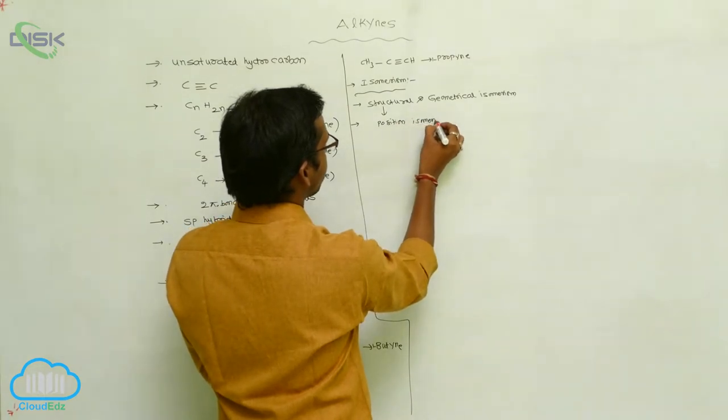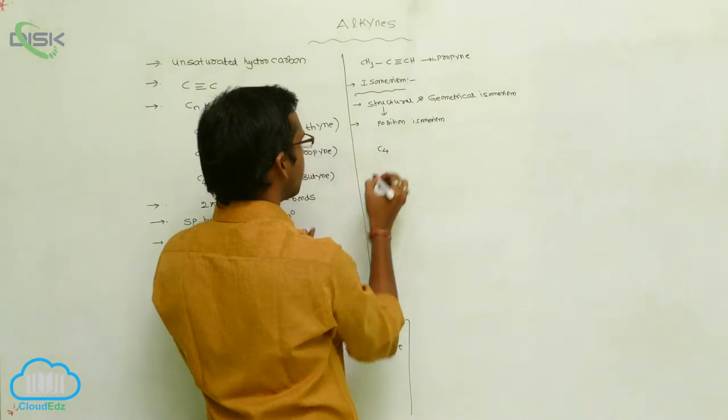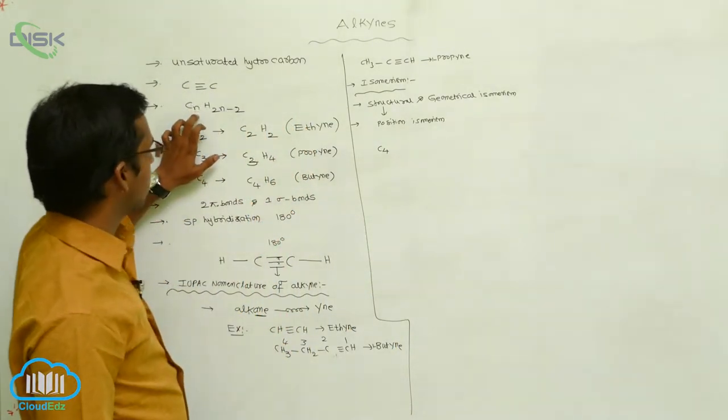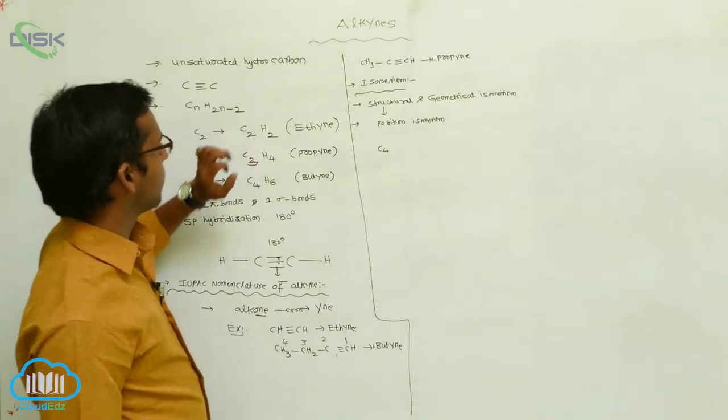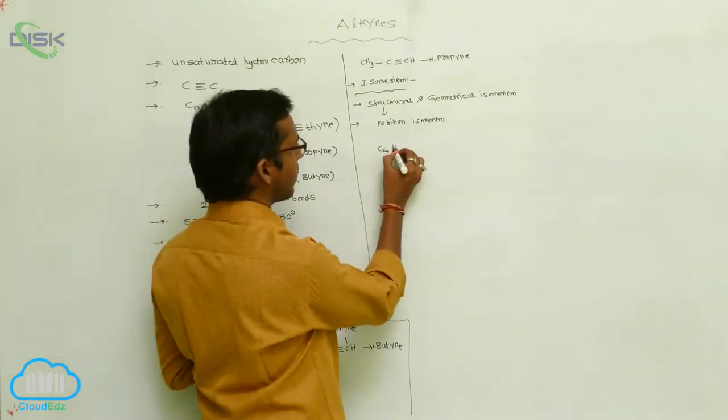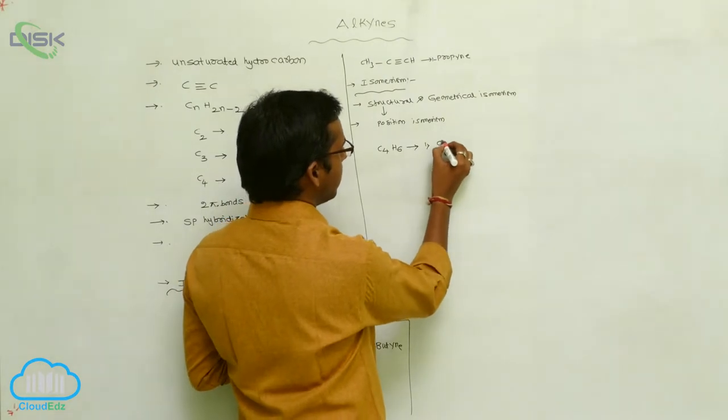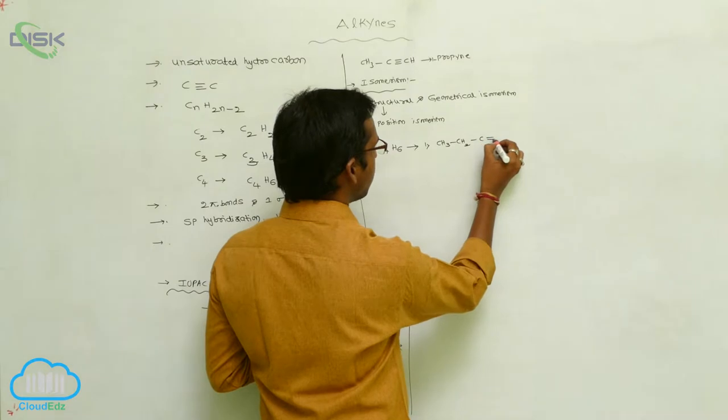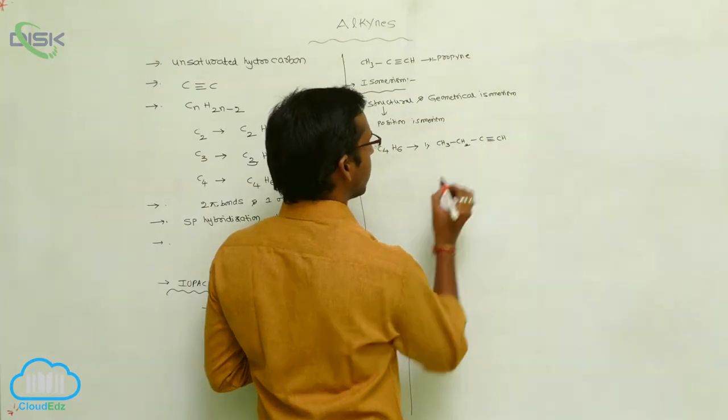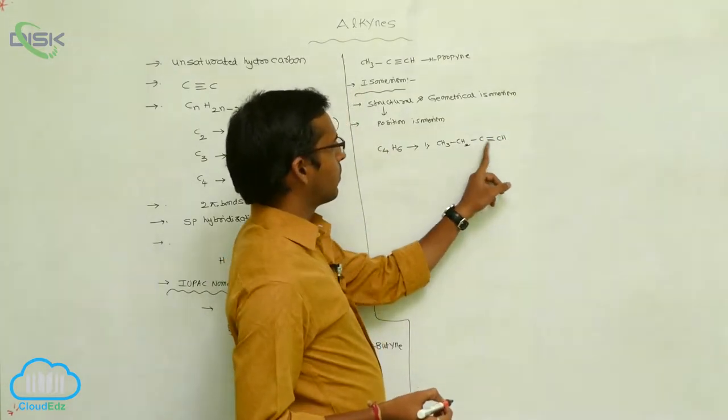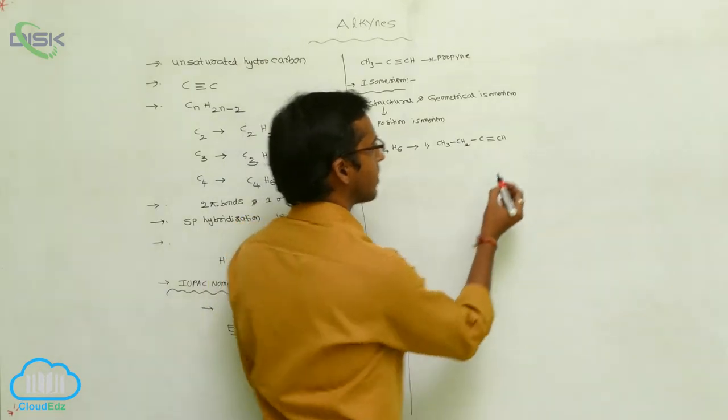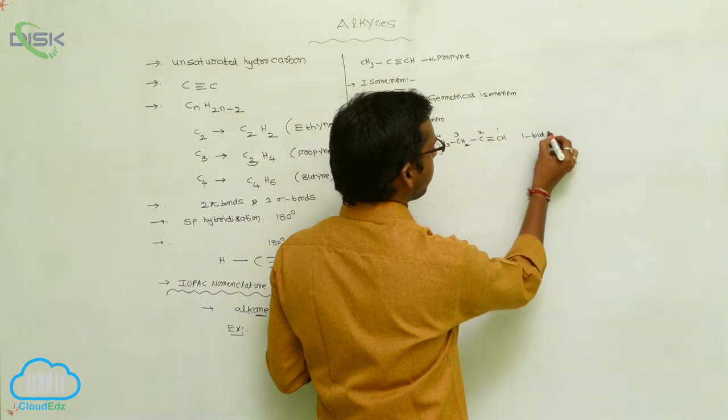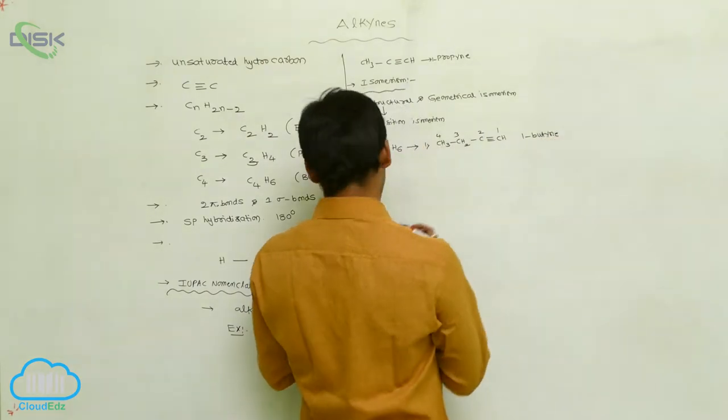Position isomerism means, for example, if it is C4, if the number of carbons are 4, then applying this equation what happened: 2 into 4 is 8, 8 minus 2, that is H6 - six hydrogens are present. It may be represented like this: CH3-CH2-C triple bond CH. 3 plus 2, 5 plus 1 is 6 - six hydrogens are present. Its name is 1-butyne.